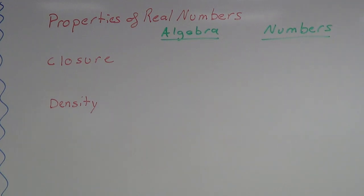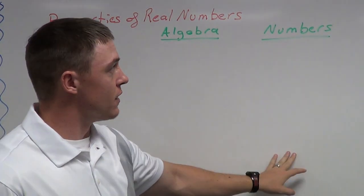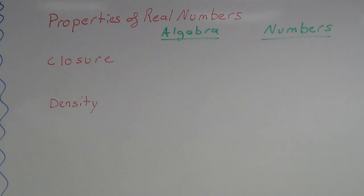Today we're going to talk about two quick properties — the final two properties of real numbers: the closure property and the density property. Just like my previous videos, I'm going to start with the algebra using variables and then do examples with numbers. These are two pretty simple properties. They're going to seem very basic — stuff that you already know — but we're taking what we know and defining them as mathematical properties.